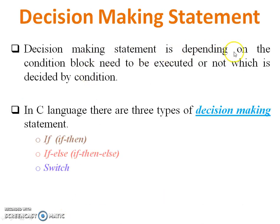Decision making statement is depending on the condition. The block needs to be executed or not, which is decided by a particular condition. So it is based totally on condition. In C language, there are three types of decision making statements: If, If-Else, and Switch.